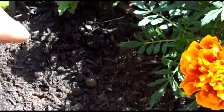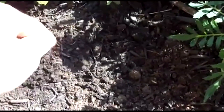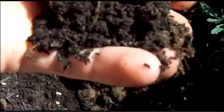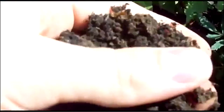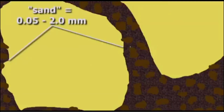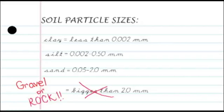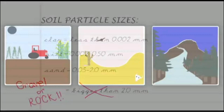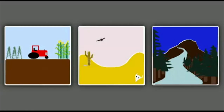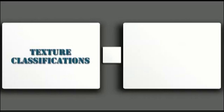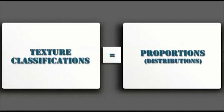When we talk about soil texture, what we are really talking about is particle size distribution. There are three basic particle types: clay, silt, and sand. Anything bigger than two millimeters we call gravel or rock. But you rarely come across something composed entirely of just one particle size, so texture classifications also convey the relative proportions of the three particle sizes.